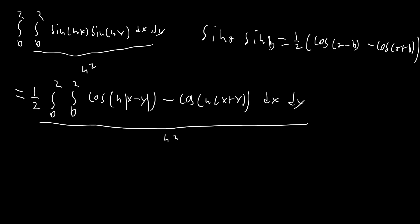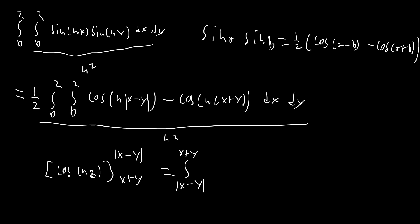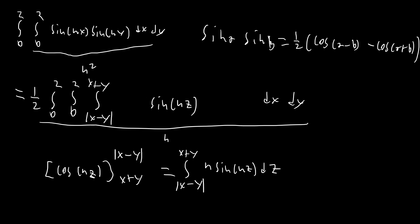Now we're going to convert the inside part into an integral. The inside part — cosine of nz evaluated at |x minus y| and x plus y — is equal to the integral from |x minus y| to x plus y of the negative derivative of cosine of nz with respect to z, which gives n sine of nz dz. That n is going to perfectly cancel with the n in the denominator. So that's what our triple integral is going to look like, and we still have the sum on the outside.